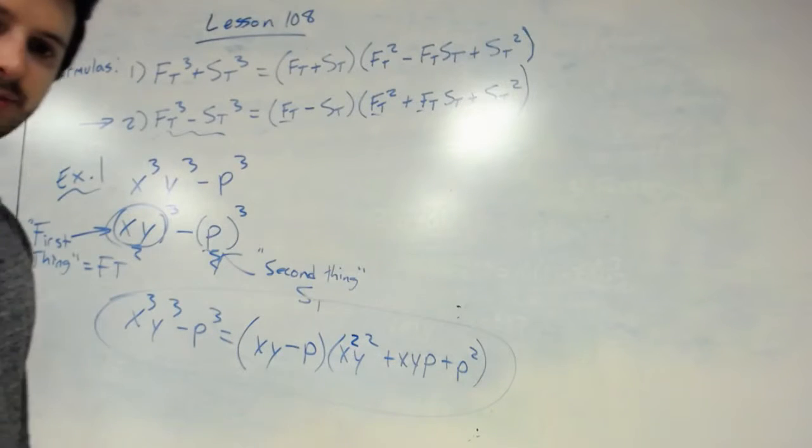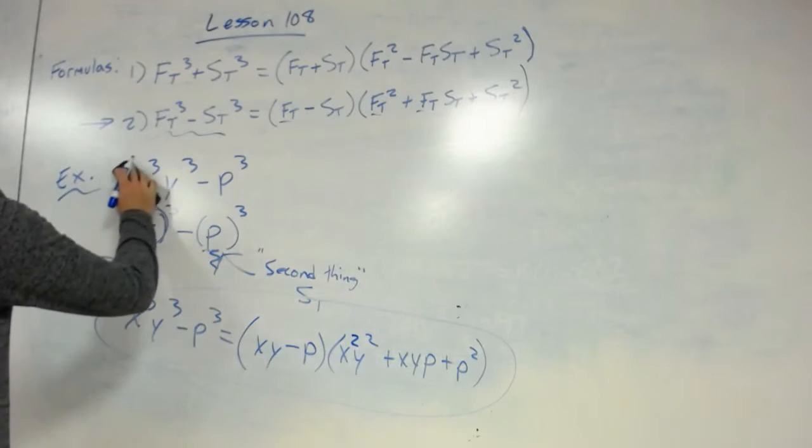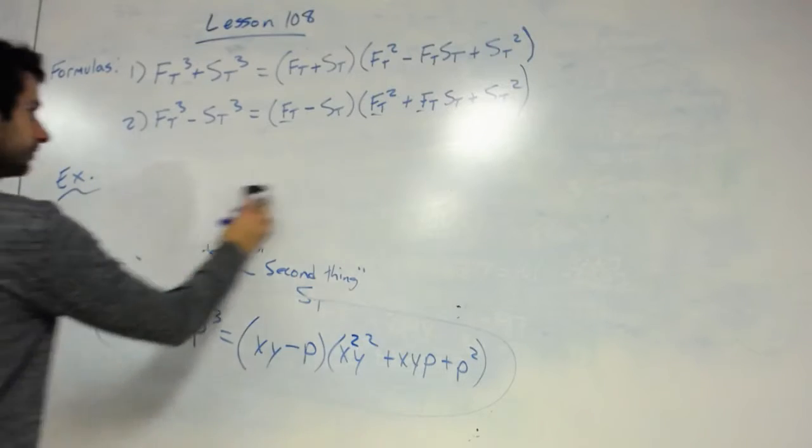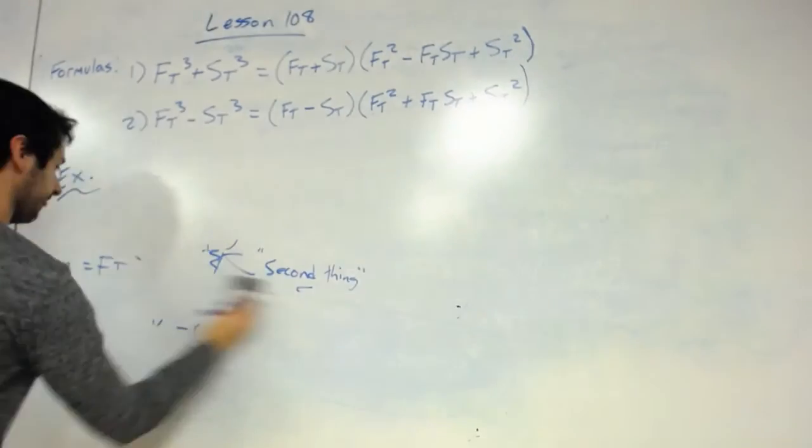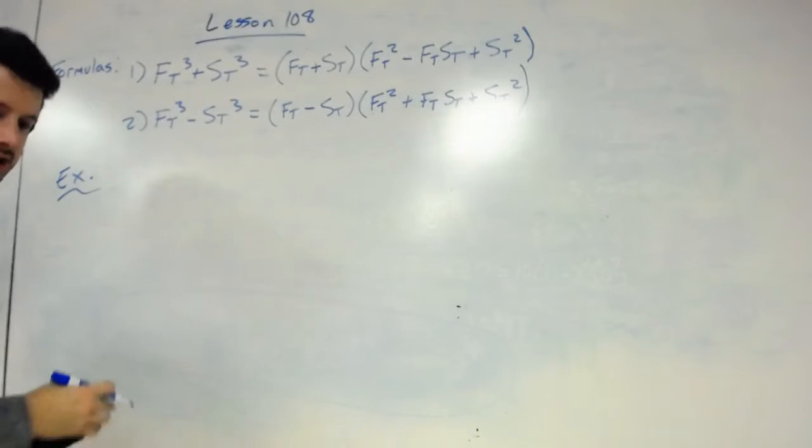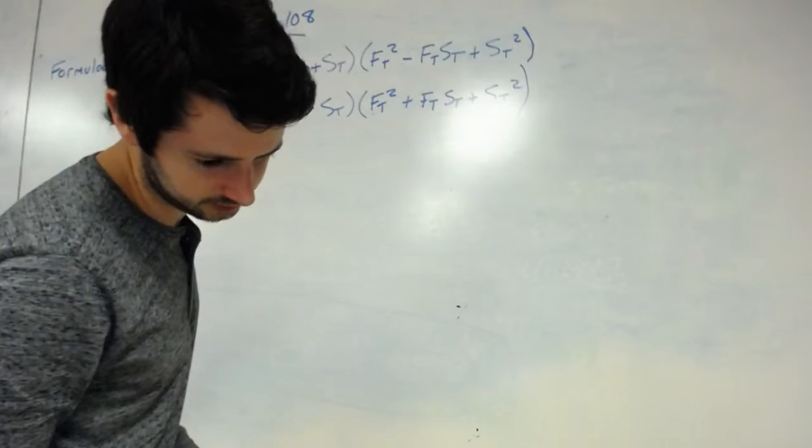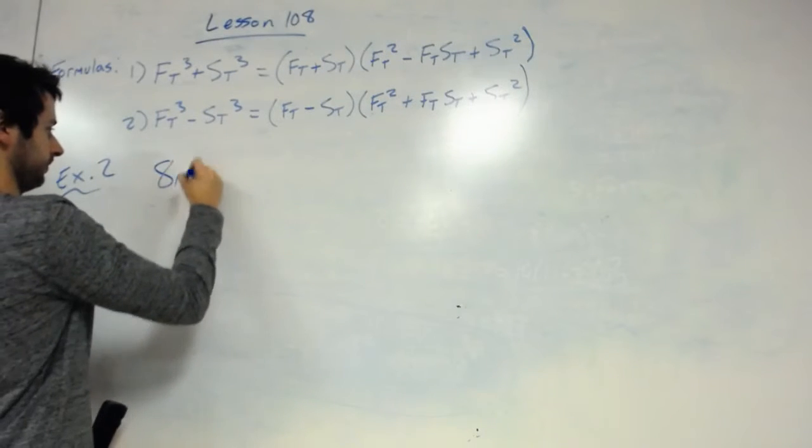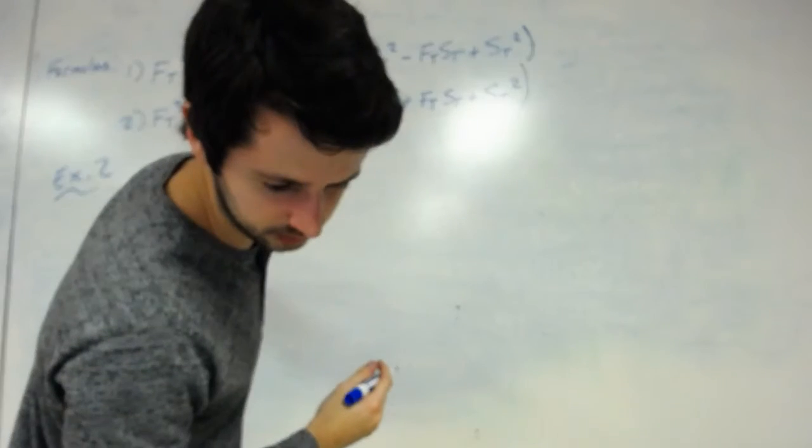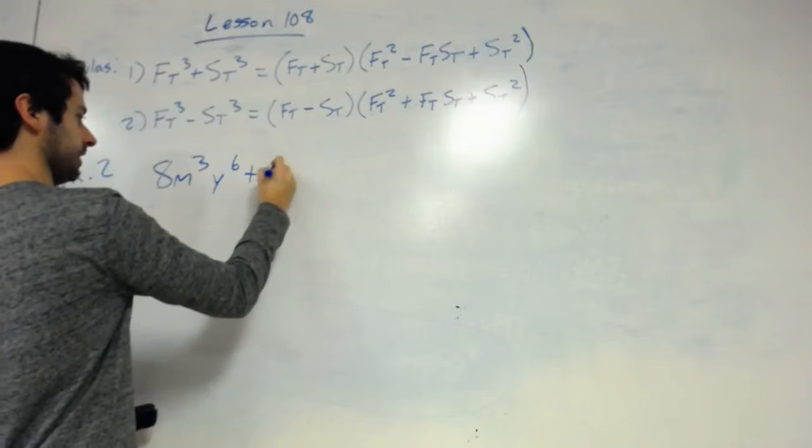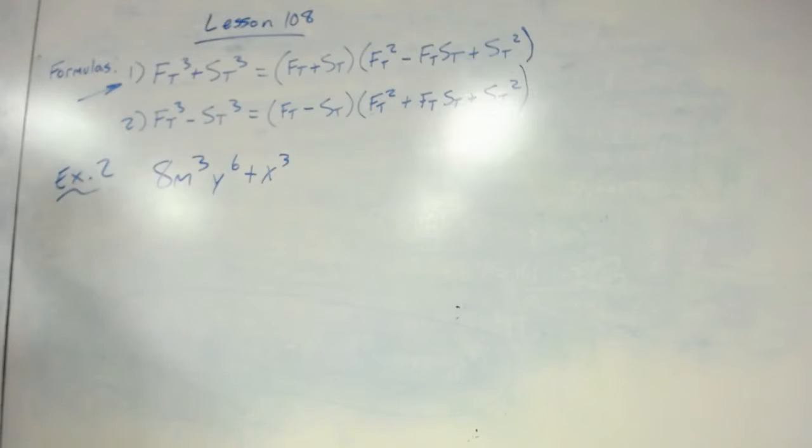Let's do one more example of an addition problem and maybe something that I would add a little bit along the way. So let's look at example two, where it says to factor 8m cubed y to the sixth plus x cubed. So positive sign, or plus sign, so we know we're going to use the first formula.